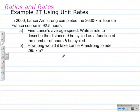Continuing our work with unit rates. In 2000, Lance Armstrong completed the 3630-kilometer Tour de France course in 92.5 hours. Part A of this problem is asking us to find Lance's average speed and to write a rule to describe the distance d he cycled as a function of the number of hours h he cycled.